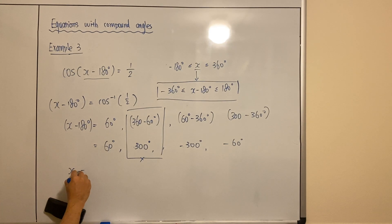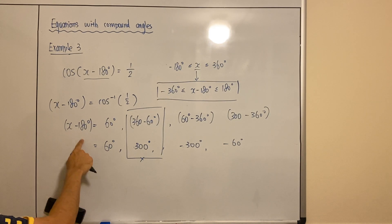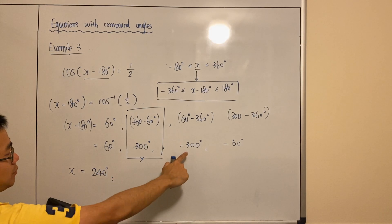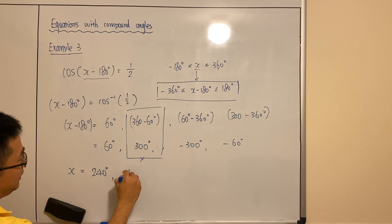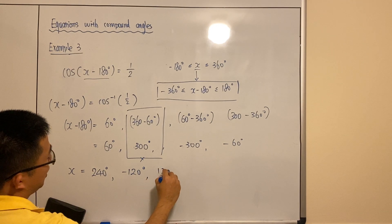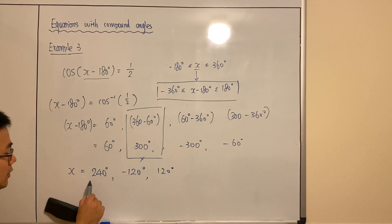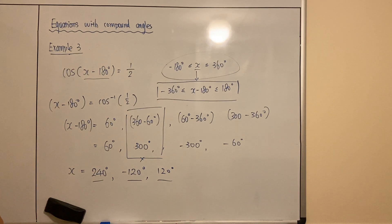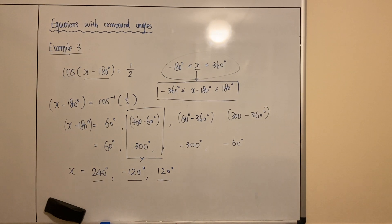Now we can work out the final answer for x. Add 180 to each answer: 60 plus 180 is 240; negative 300 plus 180 is negative 120; negative 60 plus 180 is positive 120. Those three values satisfy the original domain of negative 180 to positive 360. You can rewrite your answers in ascending order — it's better practice, and easier for the examiner to mark.